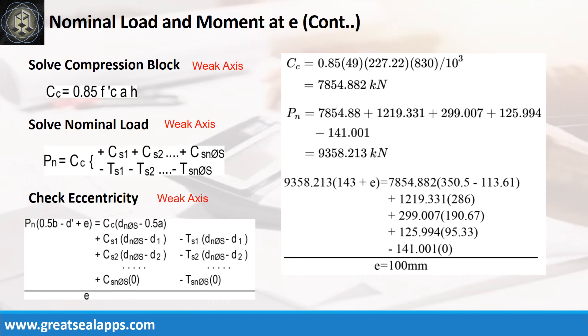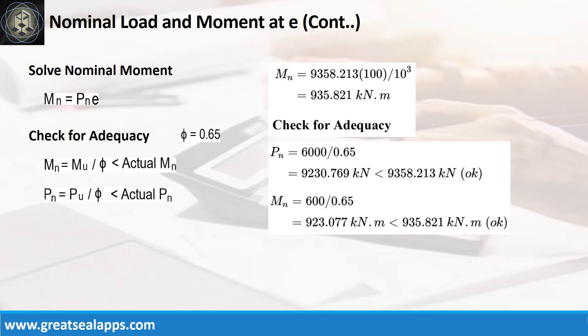Follow the given computations for final check of eccentricity at 100 mm. Given nominal axial load equals 9358.213 kN and E equals 100 mm, the nominal moment is 935.821 kN meter. Check for adequacy. The nominal design load of 9230.769 kN is less than 935.213 kN actual load capacity. And the nominal design moment of 923.077 kN is less than 935.821 kN actual moment capacity.